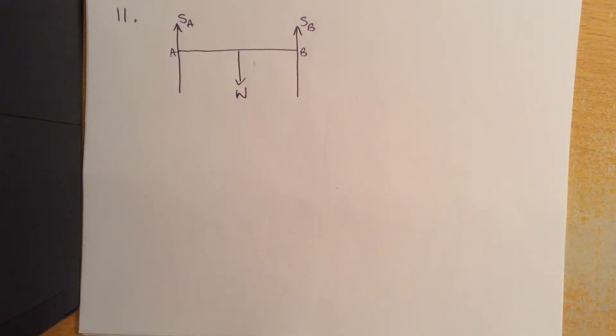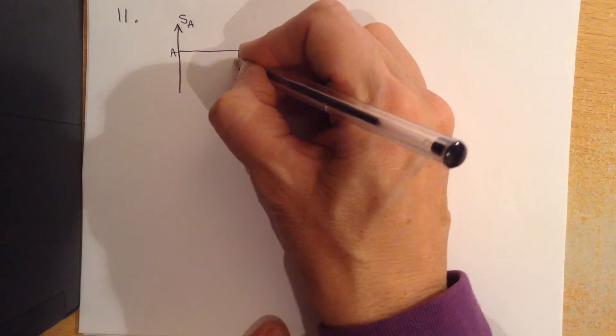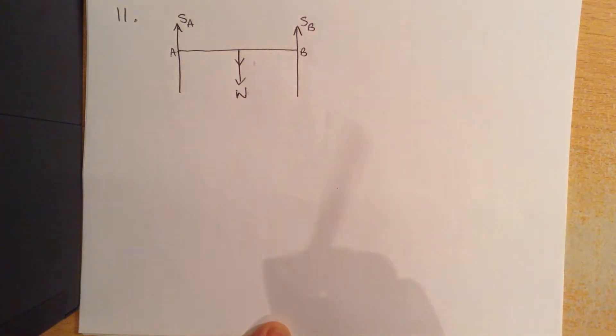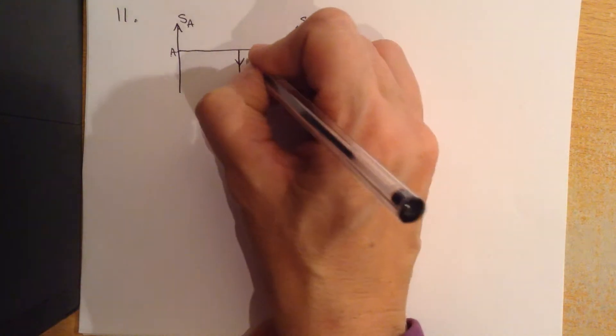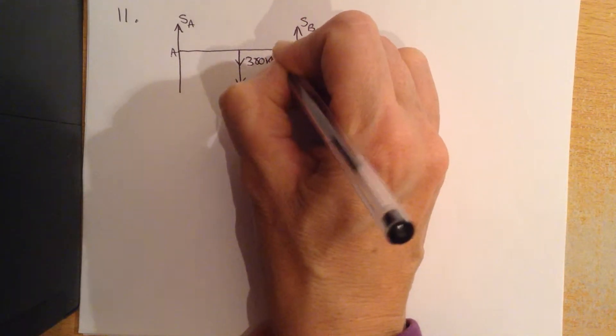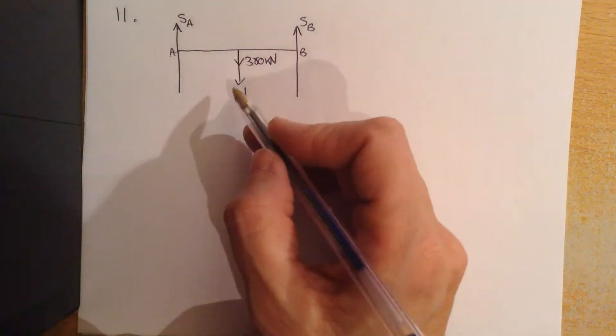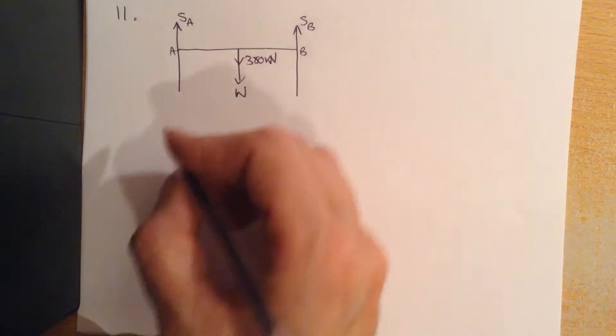Now if the weight is acting down at the centre, so I'm going to overlap my arrows, and the weight from the centre is in fact 380 kilonewtons. Part A.